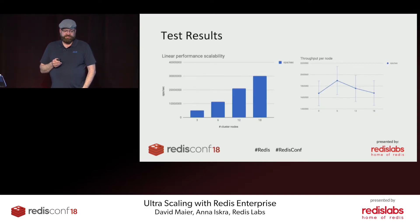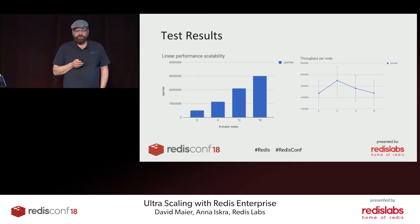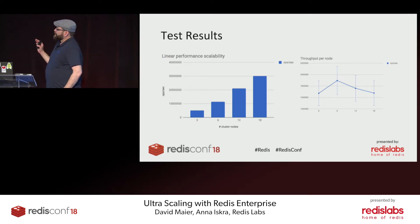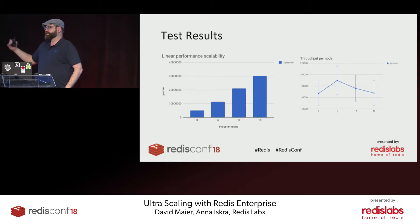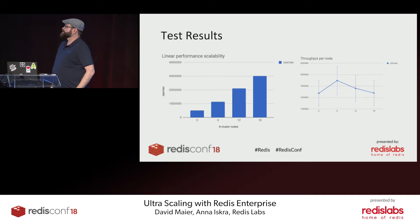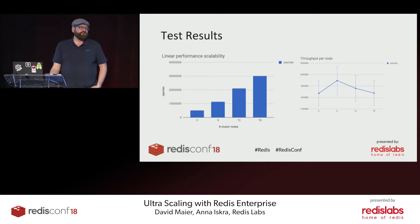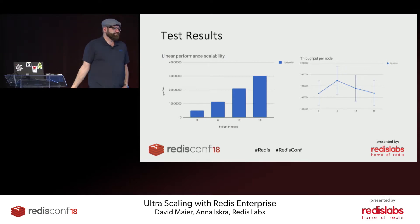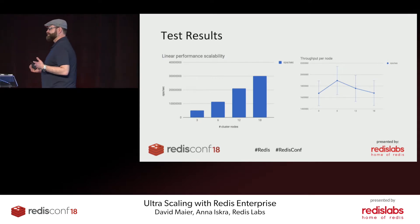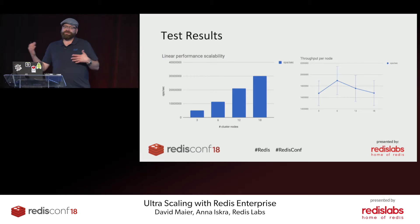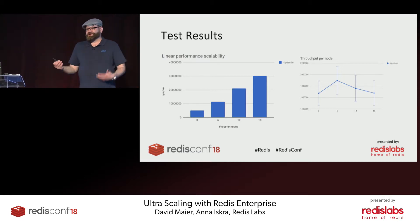Here you can see the test results. The first run gives us 5 million operations per second. On the right-hand side you can see how many operations per node were achieved. There is sometimes about 10% discrepancy across test runs due to infrastructure conditions in AWS — not always perfectly constant.